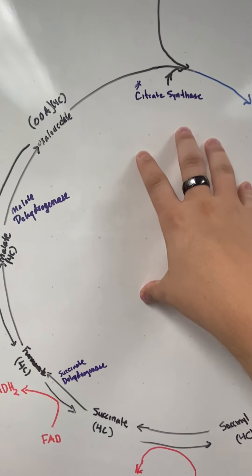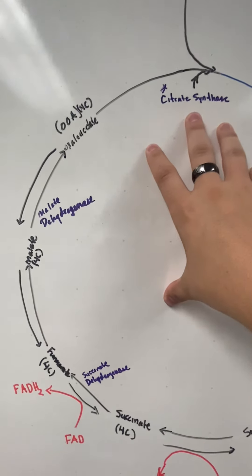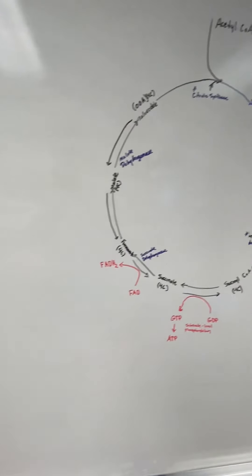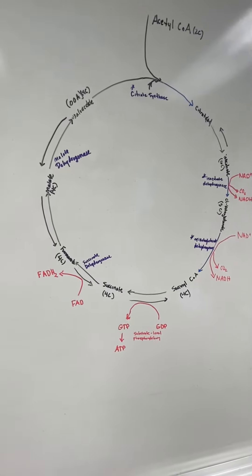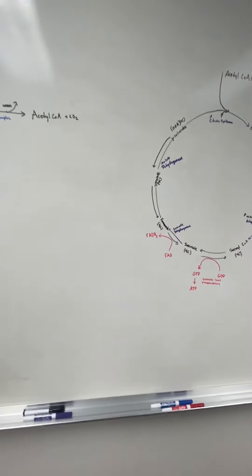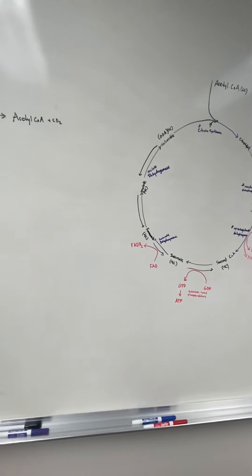We're back to the citrate synthase. The process just continues on as long as we can have glucose in the body and be in the mitochondria. That's pretty much a rushed version of the TCA cycle. Thank you.